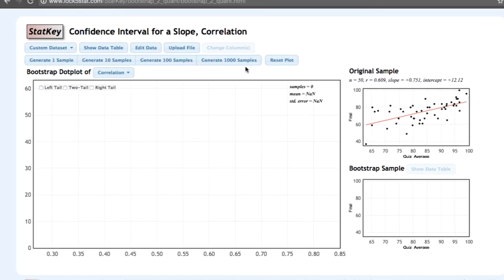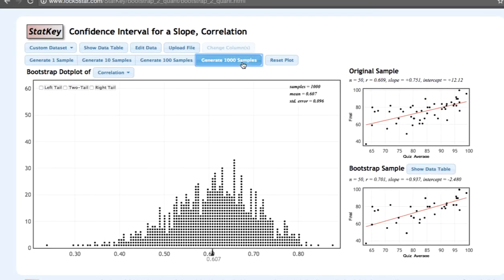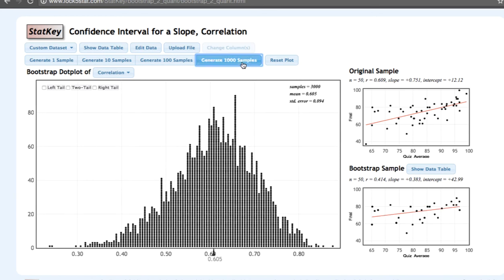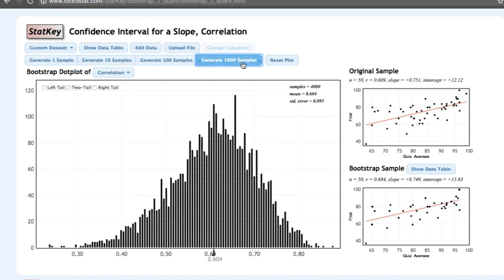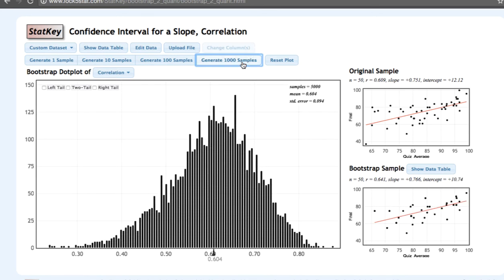Let's generate a few thousand bootstrap samples. Here we have our bootstrap sampling distribution. We're going to use the percentile method, so we'll click two tail. The default in StatKey is to construct a 95% confidence interval. Our 95% confidence interval here is 0.403 to 0.772.